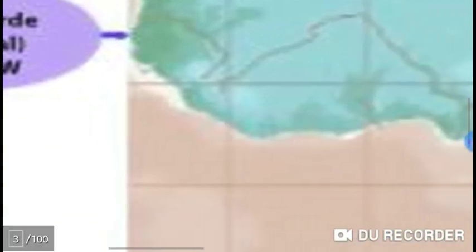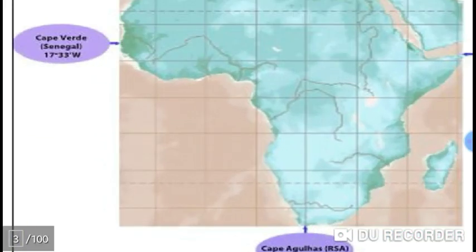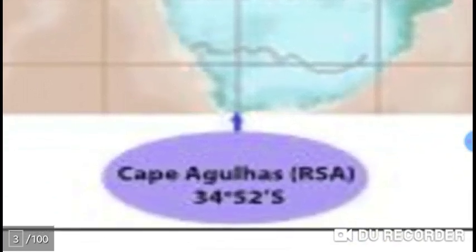Cape Verde measures 17 degrees and 33 minutes at the Western Periphery. The last one is the Southern Tip of Africa, named Cape Agulhas at South Africa, at 34 degrees and 52 minutes south.